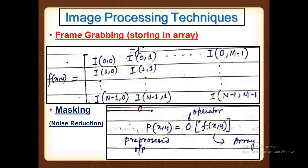The frame-grabbed raw image will have noise or granular noise, so we apply masking to reduce it. Masking generates a pre-processed output p(x,y) from the raw image f(x,y) by applying some operator T. One such method is called the neighborhood averaging method. We'll explain one or two methods so you have an idea of how masking is done.